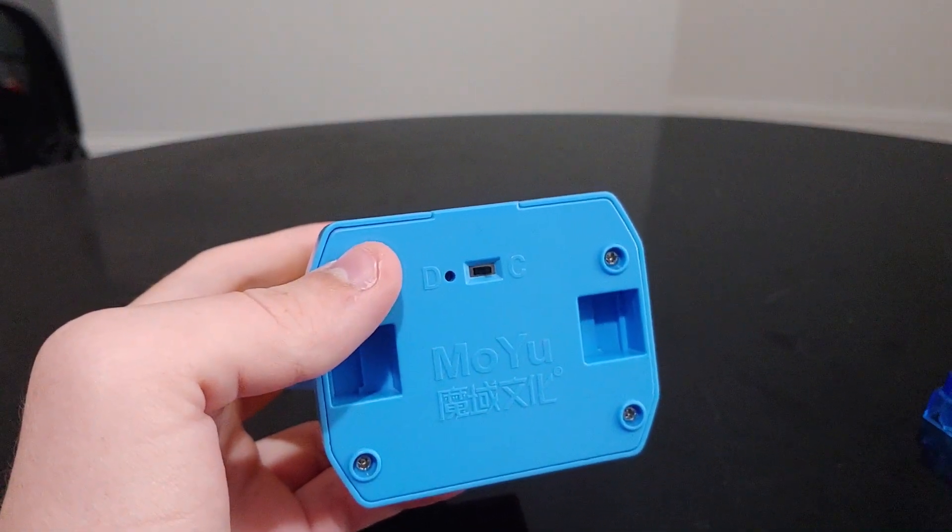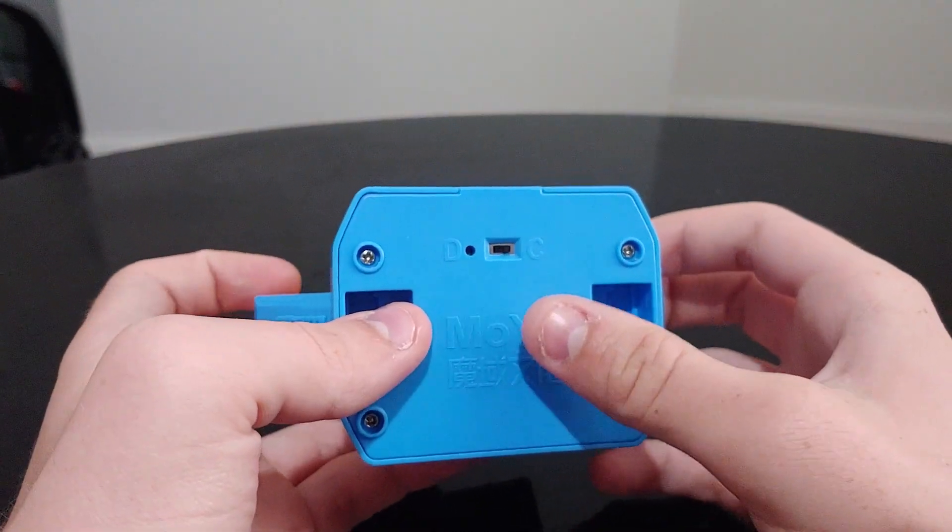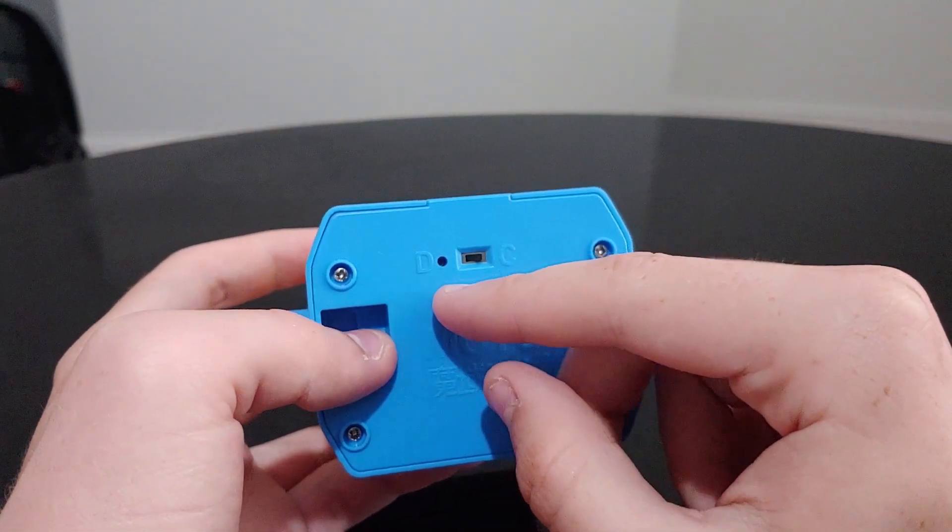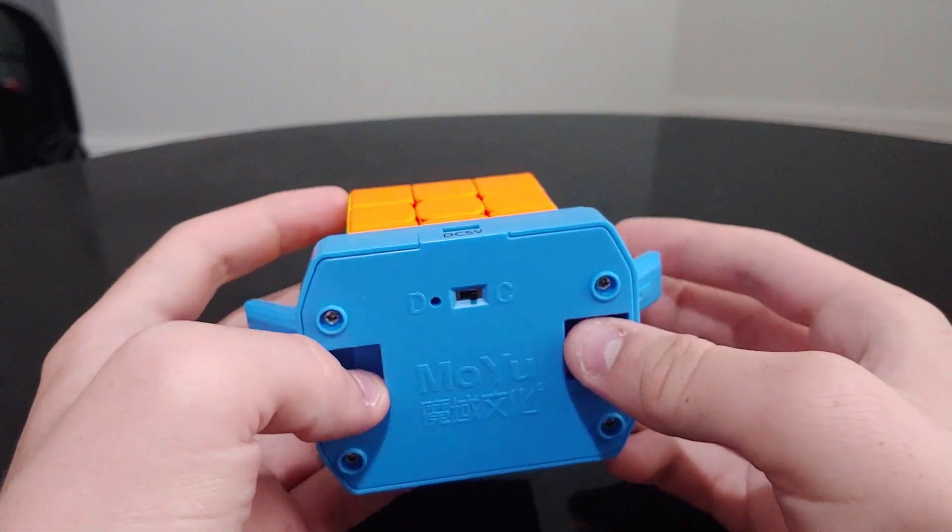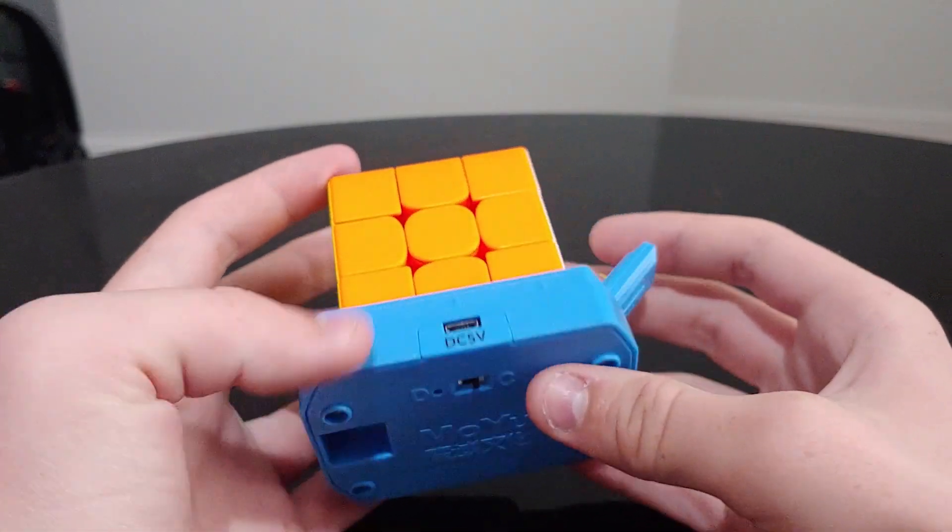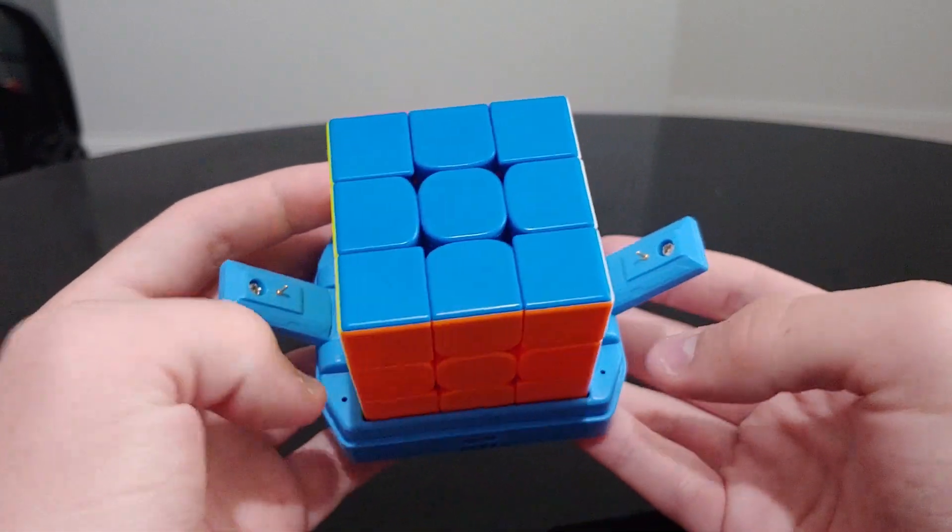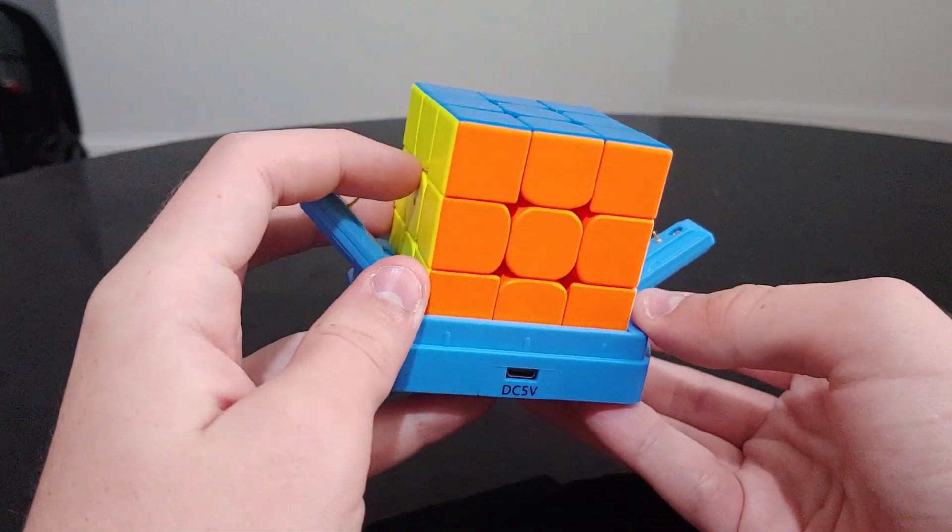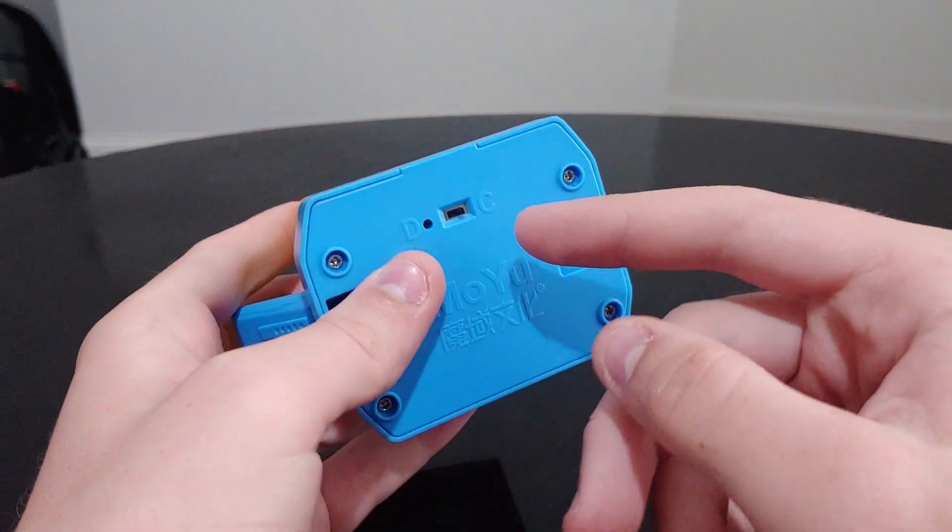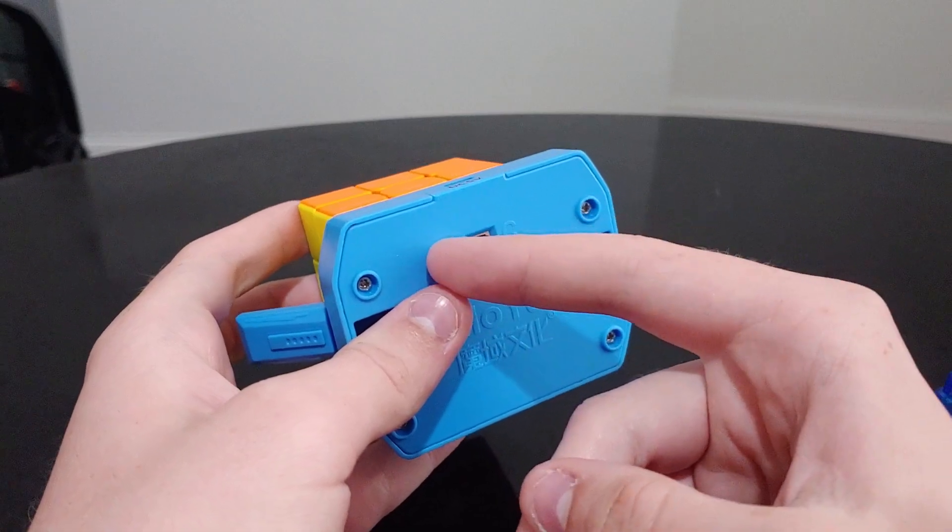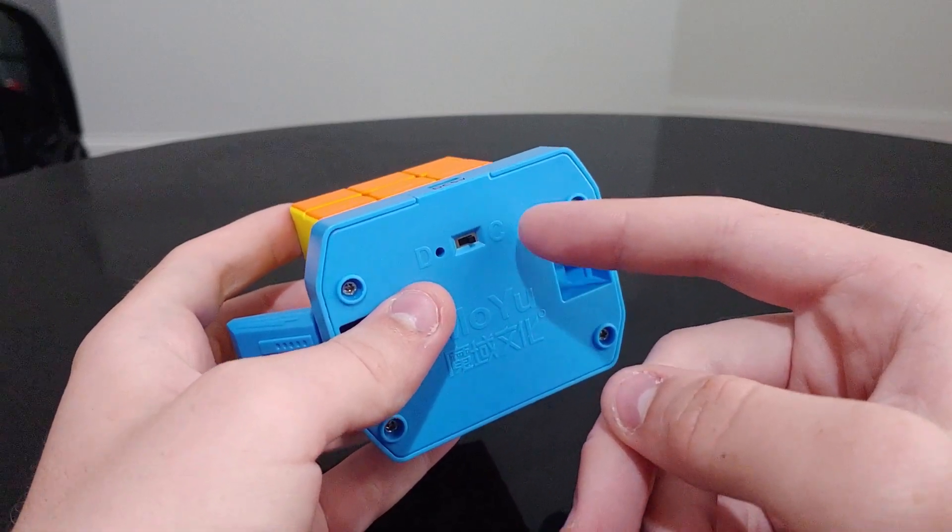D is intended to fix the issue that some other smart cubes such as the GoCube had, where after you don't use it for a long time, the battery will just go to sleep and you can never charge it again. If you use the D side, make sure that with the lights facing the front, the yellow side is on the left, white is on the right. Then plug in the case, flip the switch to D, and then back to C, and it should start charging again.